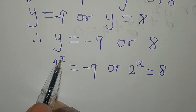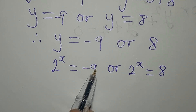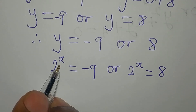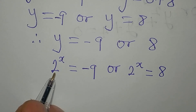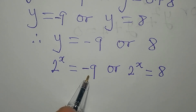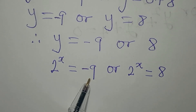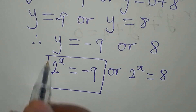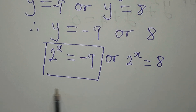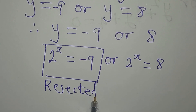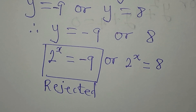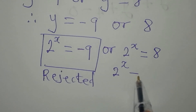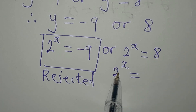From the first case, there is no value of x that gives us minus 9, because 2 to the power of 0 is 1, and 2 to the power of negative 1 is 1 over 2, which is 0.5 — always greater than minus 9. So we reject 2 to the power of x equals minus 9, as it gives no real solution. From the other side, 2 to the power of x equals 8, which can also be written as 2 to the power of 3.